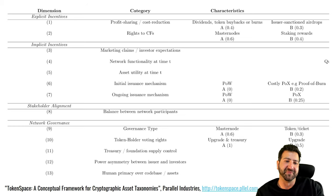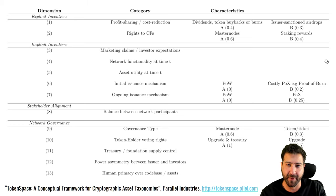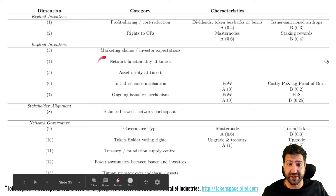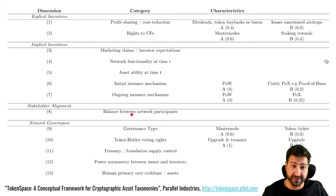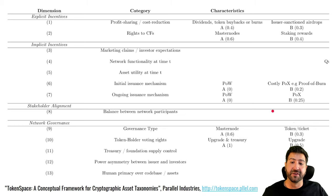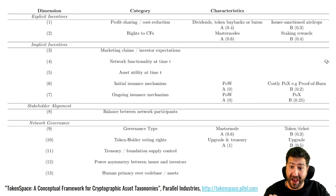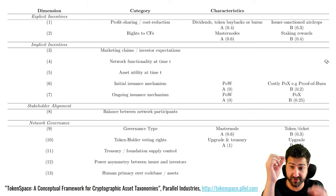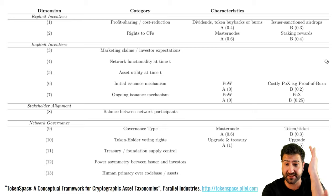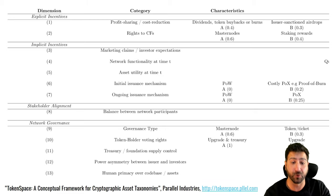It's also available at tokenspace.pubpub.org, which is easier to read in web format. You can see characteristics like network functionality, rights to cash flows, governance type, and balance between stakeholder participants. These are scored between zero and one to get weighted scores. Each characteristic has a weighting attached, which squashes all scores down into one number — that number determines the axial coordinate, giving you the three different axes that tell you where your asset sits in token space.